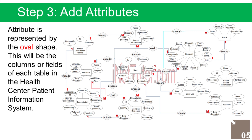Consultation entity attributes: Consultation ID (Primary Key, represented with underline), Date of Consultation, Patient ID (Foreign Key), Weight, Temperature, Blood Pressure, Referred To, Prescription, and Encoded By (Foreign Key). Resident entity attributes: Resident ID (Primary Key), First Name, Middle Name, Last Name, Age, Gender, Poroch ID (Foreign Key), Date of Birth, Status, Nationality, Occupation, Date Encoded, and Encoded By (Foreign Key). Poroch entity attributes: Poroch ID (Primary Key, represented with underline), Name, Date Encoded, and Encoded By (Foreign Key).